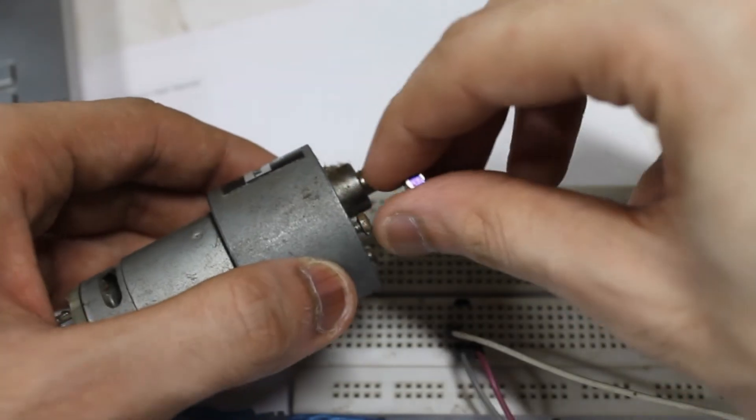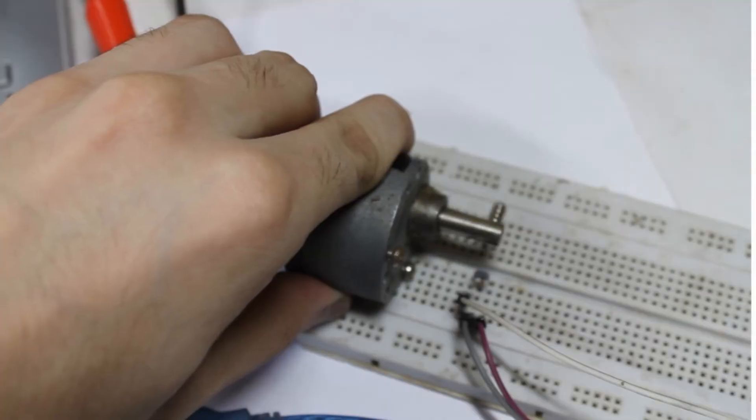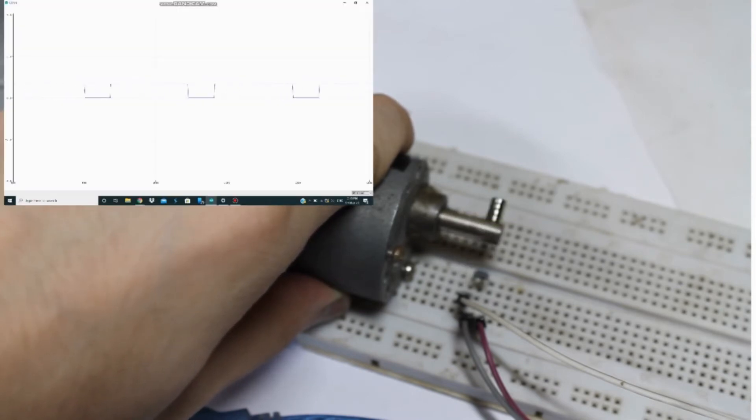There the only modification was the pull-up resistor. I then attached a magnet to the motor shaft to spin it near the Hall Effect sensor. The output of the sensor was not surprisingly a square wave with the following terminology.